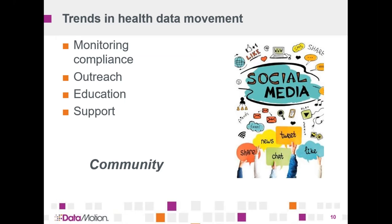So what trends are we seeing in healthcare and what's changing? One of the big changes we're seeing as we look at MIPS and MACRA and this move towards accountable care and outcomes-based medicine and really person-centric medicine and wellness is the need for better monitoring and compliance in patients, better ways to increase outreach to our patients, educational support, and really support from their peers. Someone who's facing a diagnosis of diabetes or cancer or hypertension needs that support to modify lifestyles and improve their outcomes. Social media in many ways is simply about community.